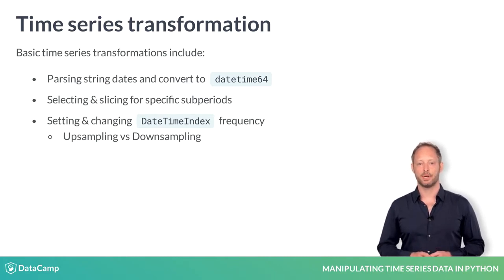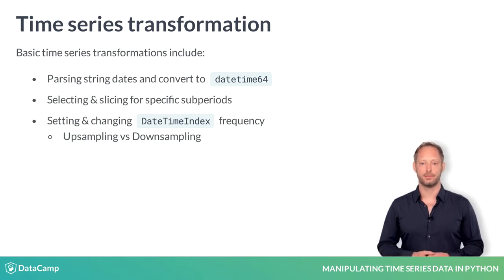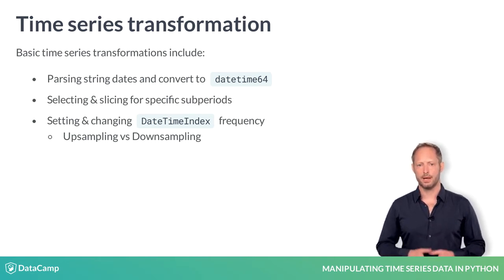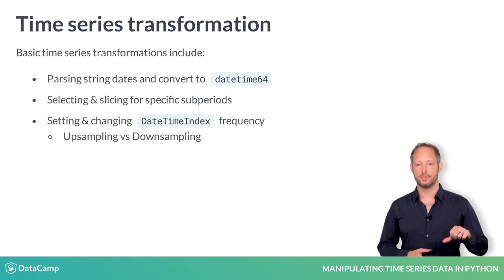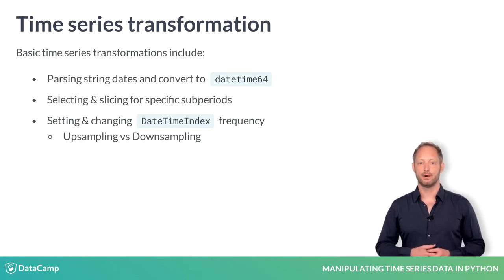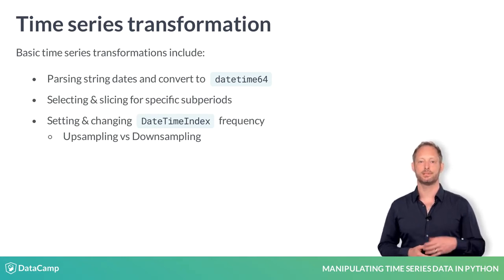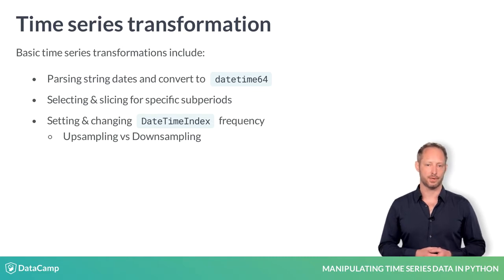Upsampling involves increasing the time frequency, which requires generating new data. Downsampling means decreasing the frequency, which requires aggregating data. We'll discuss downsampling in the next chapter.